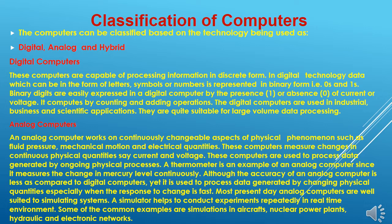Now the classification of computers. We can divide computers into three parts according to the technology used in them: digital computers, analog computers, and hybrid computers. Digital computers process information in discrete form — discrete means like on and off. They represent data in the presence or absence of current or voltage, and compute by counting and adding. Digital computers are used in industry, business, and scientific applications, and are quite suitable for large volumes of data.